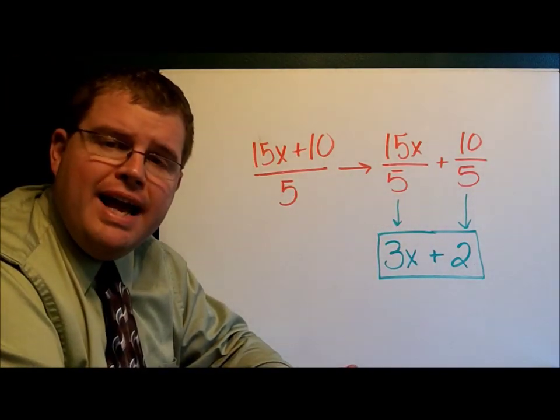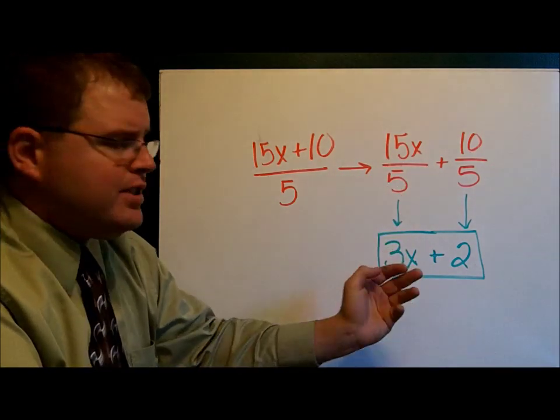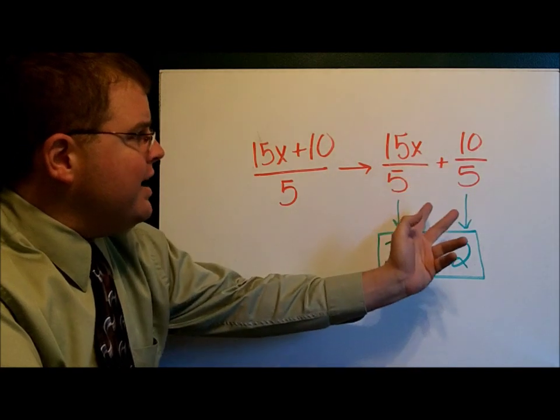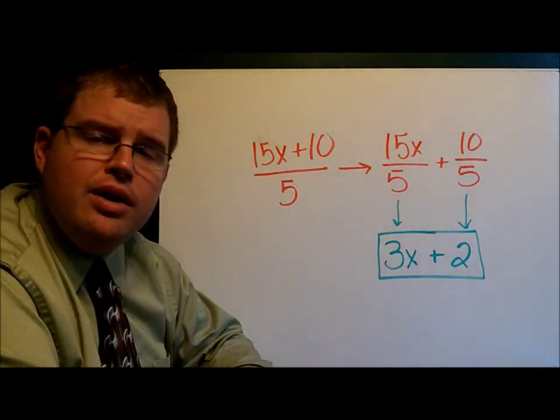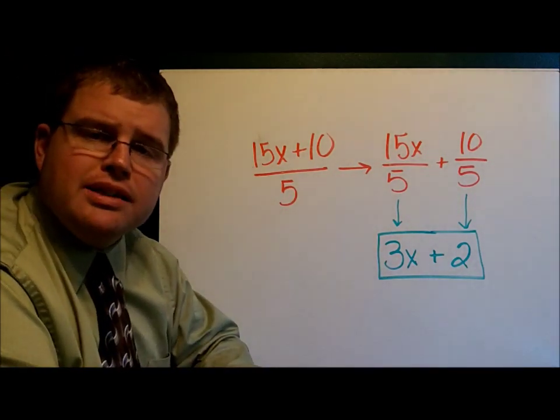Once I've broken it in half, I can simplify each part. 15x divided by 5 is 3x. 10 divided by 5 is 2. And so written in simplest form, this fraction is 3x plus 2.